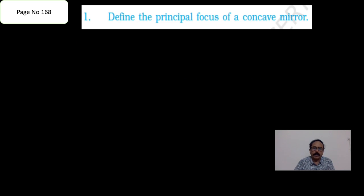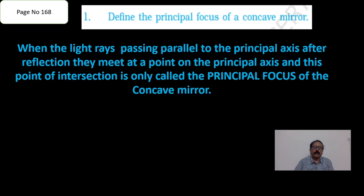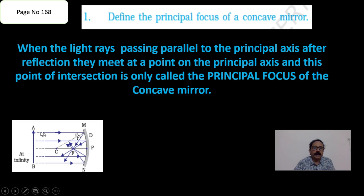The first question is: define the principal focus of a concave mirror. When light rays pass parallel to the principal axis, after reflection, they meet at a particular point on the principal axis — this point is known as the principal focus. All the rays come parallel to the principal axis, which is the line joining the pole and center of curvature, and after reflection they pass through a particular point known as the focus.